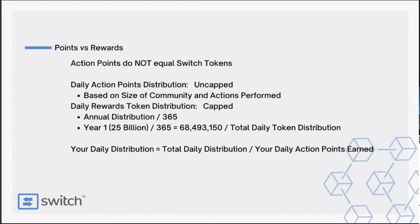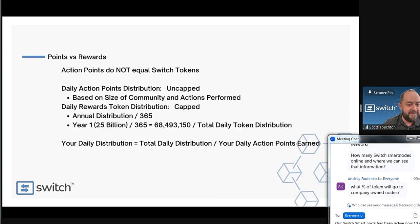That works out to 68 million and some change every single day. The ratio is not a fixed number — it changes daily. To determine your daily distribution: take the total daily token distribution of 68,493,150 and divide it by the total action points earned that day. It's basically like a pie — we can't create more pie, we just cut it into slivers based on activity on the network and community. So the ratio varies because the total action points earned on any given day could differ.